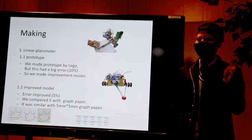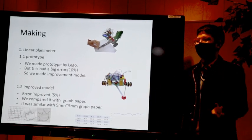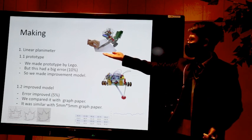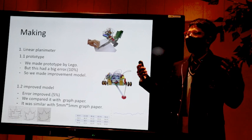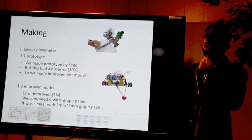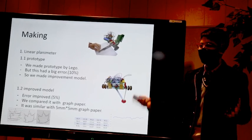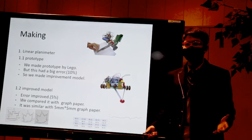We made three planimeters. First one is linear planimeter. We made a prototype, you can see here, by Lego. We improved this material by metal. First prototype had a big error, but improved model had only 5% error.